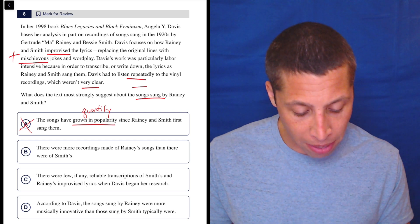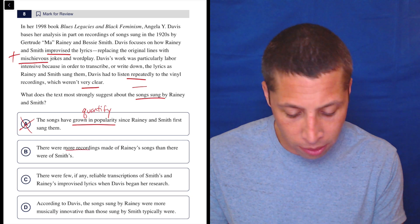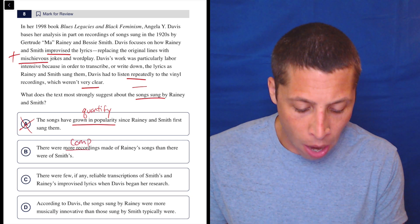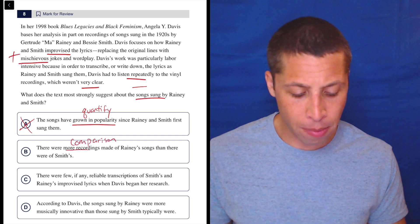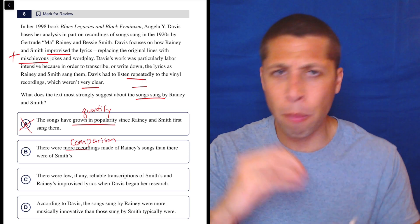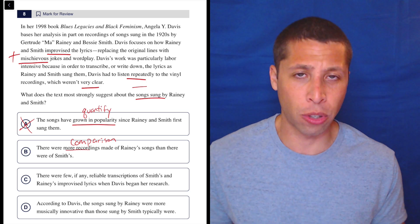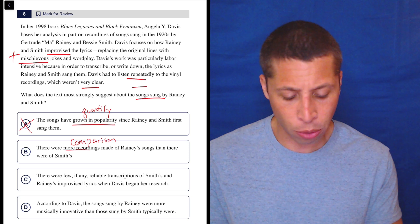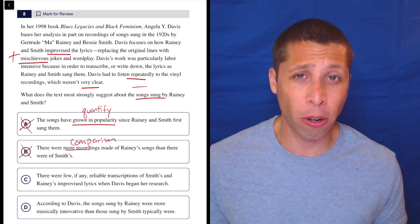B: There were more recordings made of Rainey's songs than there were of Smith's. Well, this is a comparison. Now, we are talking about both Rainey and Smith, but I don't think that we are comparing them, especially to say one is more or better or whatever. It just seems like we're talking about them together as a unit. So to rank them or set them apart from each other seems wrong.